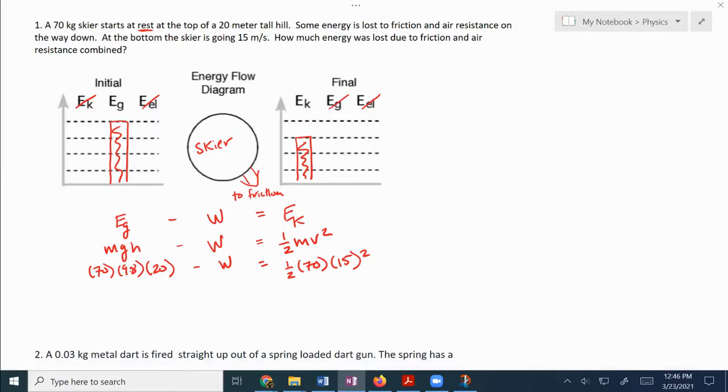Do a little calculation here. We got 70 times by 9.8 times by 20, that's going to give us 13,720 minus w is equal to 0.5 times by 70 times by 15 squared is 7,875. Okay cool. So you can see we've lost some energy, right? We started out with basically 13,000 joules, almost 14,000 joules. We're down to a little under 8,000 joules. So we've lost some energy during that process.